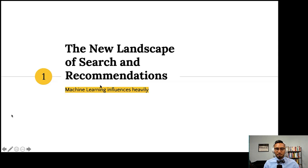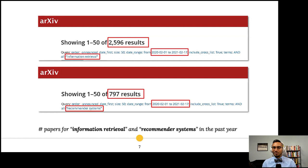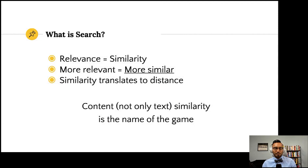Let's hop into this new landscape. Machine learning now heavily influences search and recommendations. The main bottleneck before was hardware — there wasn't enough to put machine learning into production ranking and recommendation systems. But now the hardware is in such a state that you can deploy quite sophisticated algorithms. Looking at arXiv, there are hundreds to thousands of papers mentioning both information retrieval and recommender systems, showing a lot of active research happening in these areas.